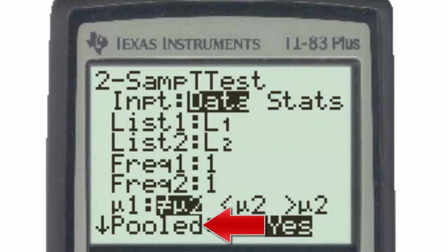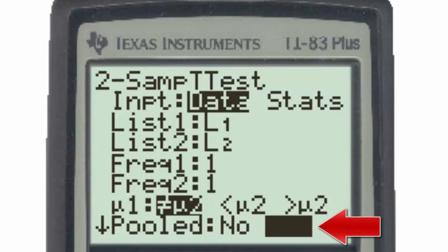For the question of pooled, we will make the general assumption of pooled yes, which means that we are assuming that the standard deviations of these two populations are approximately equal.